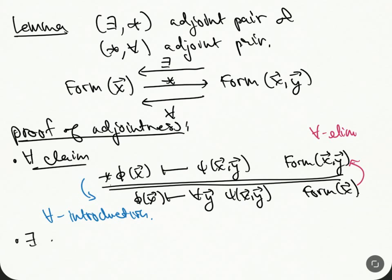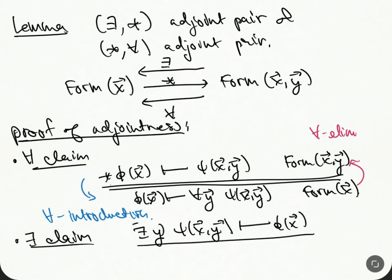So the claim for the existential quantifier is pretty much the same thing. Except the arrows are a little bit backwards. So we have this here. And then we have this. Let's do a different color.